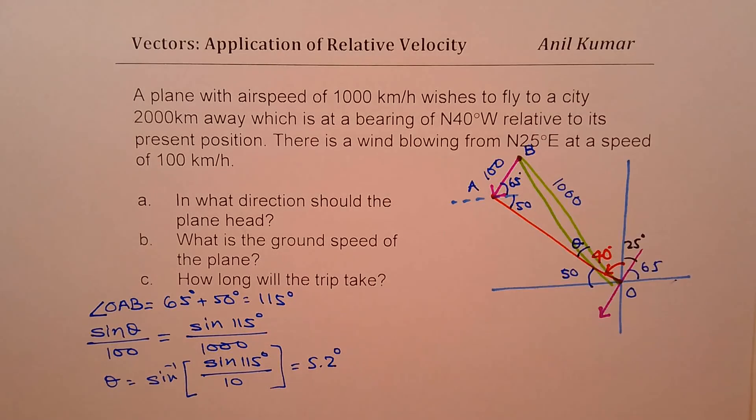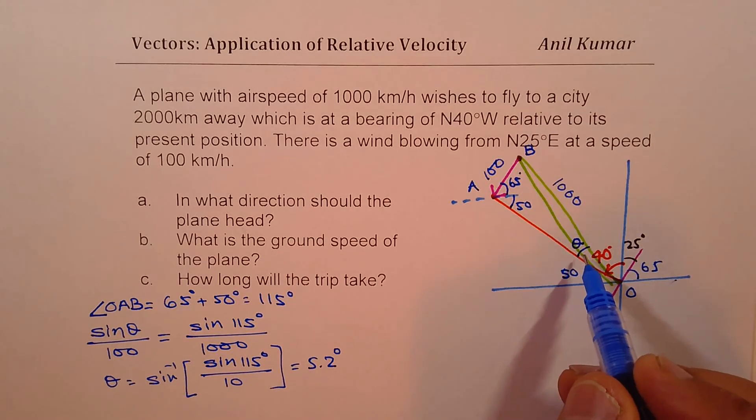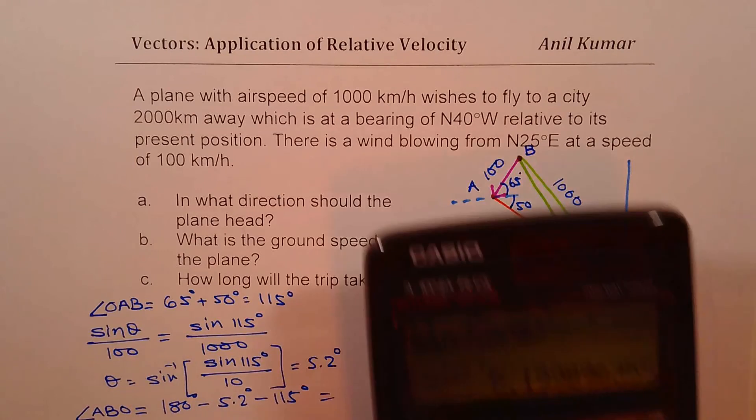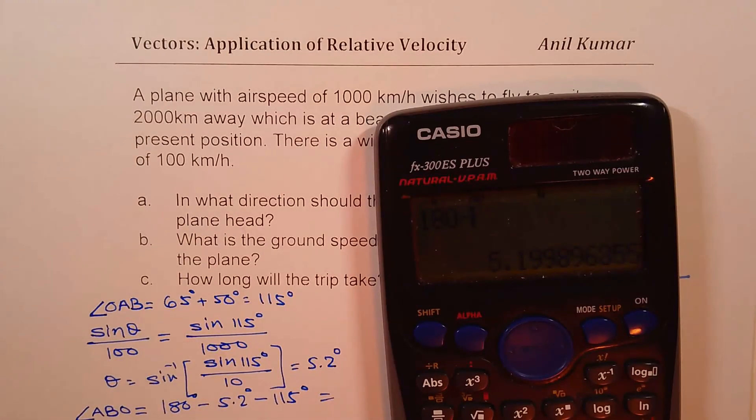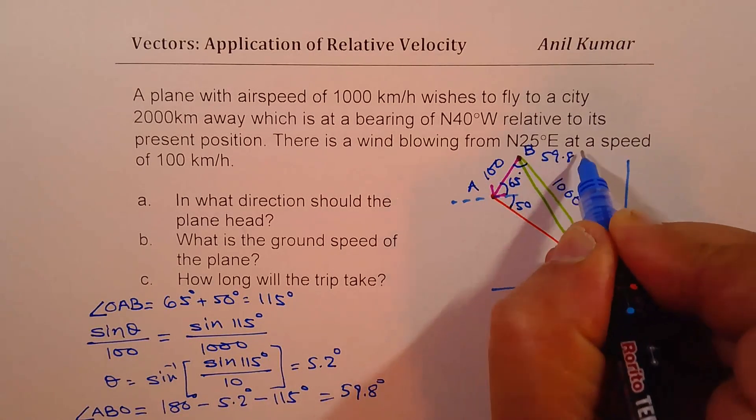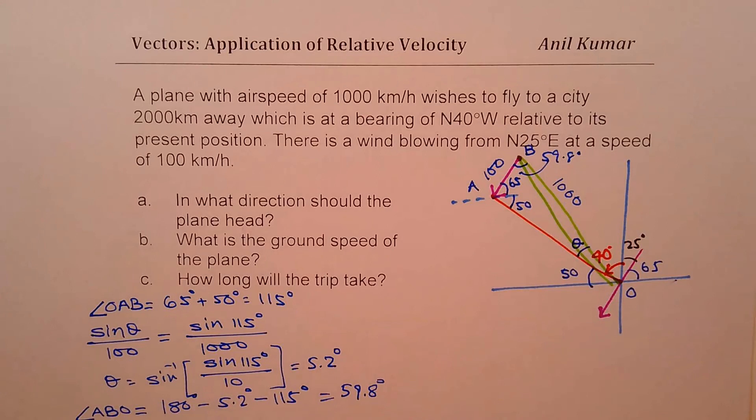So we get this angle here as 5.2 degrees. Now, once theta is 5.2, we can find the angle at B. What is the angle ABO? ABO will be 180 degrees minus 5.2 degrees and minus 115 degrees. Let's calculate, 180 minus 5.2 minus 115 gives us 59.8. So this is 59.8 degrees. So the angle at B is 59.8 degrees. So we have actually solved our triangle.